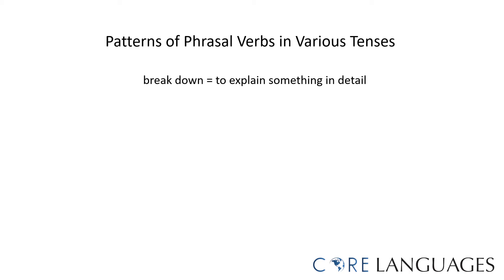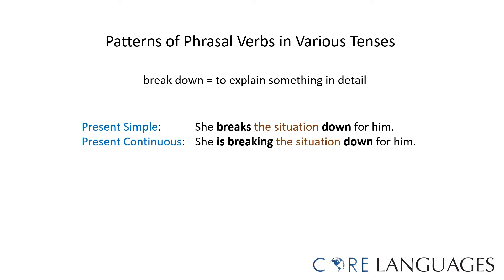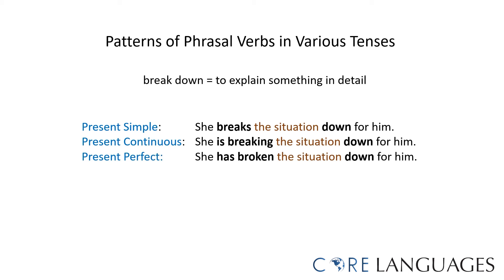Here are examples of sentences using the phrasal verb 'break down' in different tenses. To break down means to explain something in detail. In this example, the object of this phrasal verb is 'the situation.' Pay close attention to the word order. She breaks the situation down for him. She is breaking the situation down for him — this sentence is in the present continuous. She has broken the situation down for him — this sentence is in the present perfect.